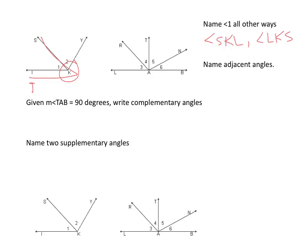Next one, name adjacent angles. So adjacent angles have to have the same side. So I'm going to say angle 5 and angle 6 are adjacent.